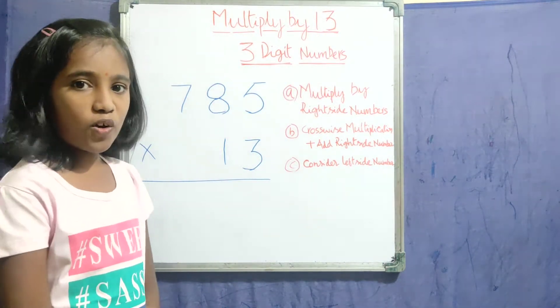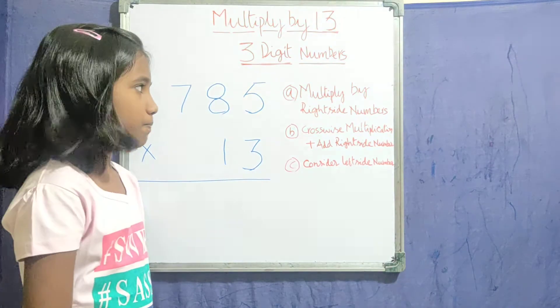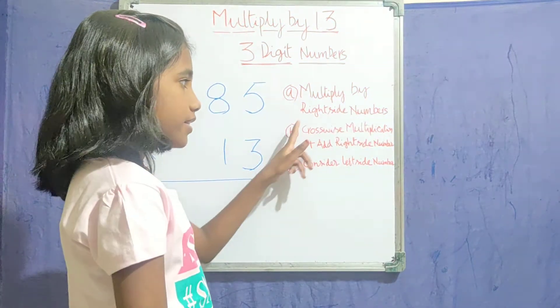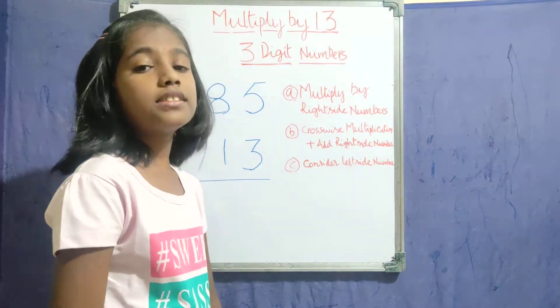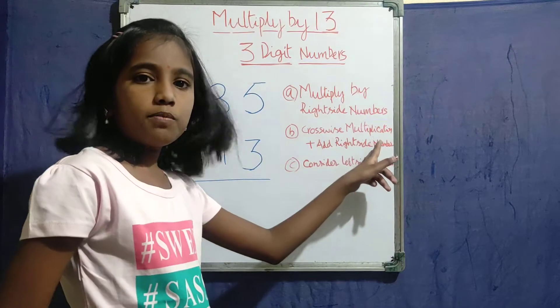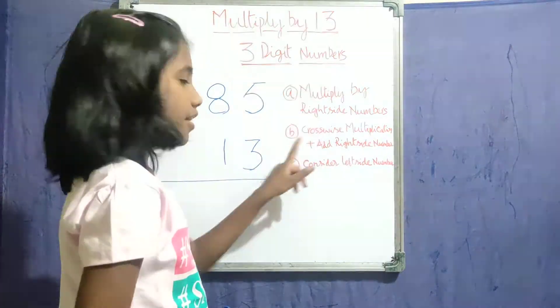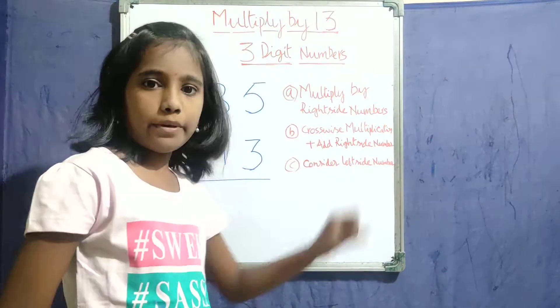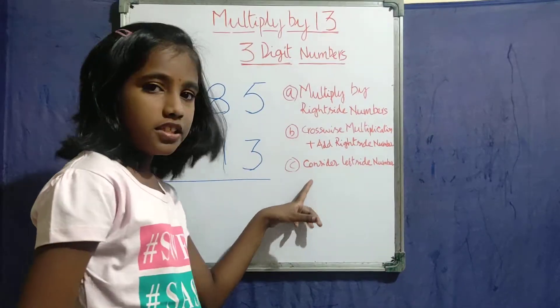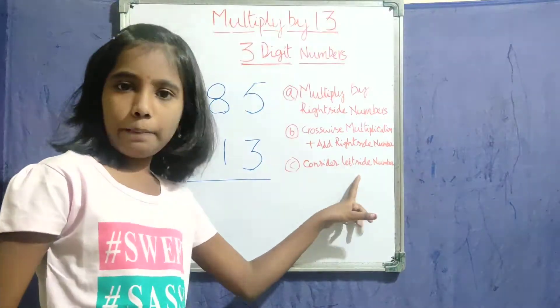There are some rules to follow. First one: multiply the right side numbers. Second one: crosswise multiplication at the right side numbers. Third one: consider the left side number.